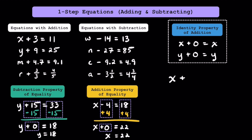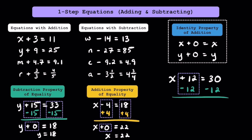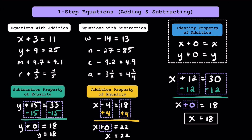Let's look at this equation of x plus 12 is equal to 30. There's one number that x could be that makes this equation true. Notice how we have an addition sign, so we're going to use the subtraction property of equality. We need to subtract 12 from the left side and 12 from the right side, because 12 is the opposite of positive 12. Combining this positive 12 with this negative 12, we get 0, so we can write x plus 0 underneath. Subtracting 30 minus 12, we get 18, so x is equal to 18. When we subtracted 12 from both sides we used the subtraction property of equality, or SPE. When we simplified x plus 0 to just x, we used the identity property of addition, or IPA.